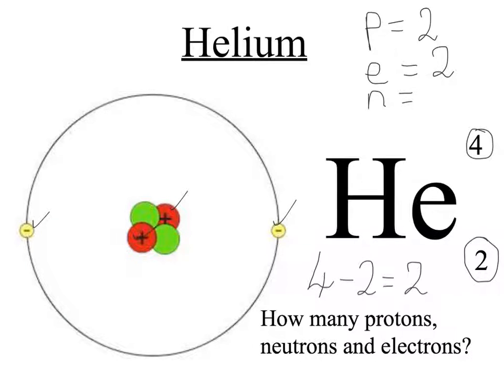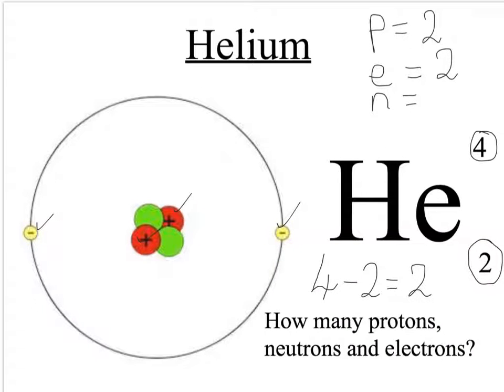Now, not all elements have the same number of neutrons and electrons. In helium, it's quite nice because they're all two. But there are some atoms where this is not the case.